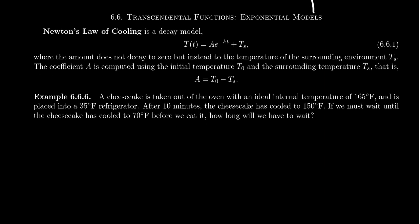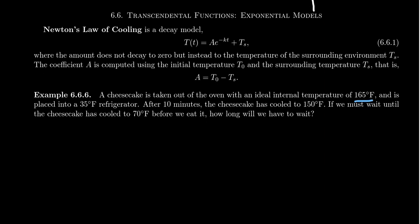So imagine we have a cheesecake taken out of the oven with an ideal internal temperature of 165 degrees Fahrenheit, and it's placed in a refrigerator which is 35 degrees Fahrenheit. After 10 minutes, the cheesecake has cooled to 150 degrees Fahrenheit. If we must wait until the temperature is cooled to 70 degrees before we can eat it, how long do we have to wait for that to happen? So we can model the cooling of this cheesecake using Sir Isaac Newton's law of cooling using the formula right here. So what data do we already have? We have that the initial temperature T naught is equal to 165 degrees Fahrenheit. We have that the surrounding temperature, that is the refrigerator, is kept at a chilled 35 degrees Fahrenheit. We also have the observation that after 10 minutes, the temperature of the cheesecake lowers to be 150 degrees Fahrenheit.